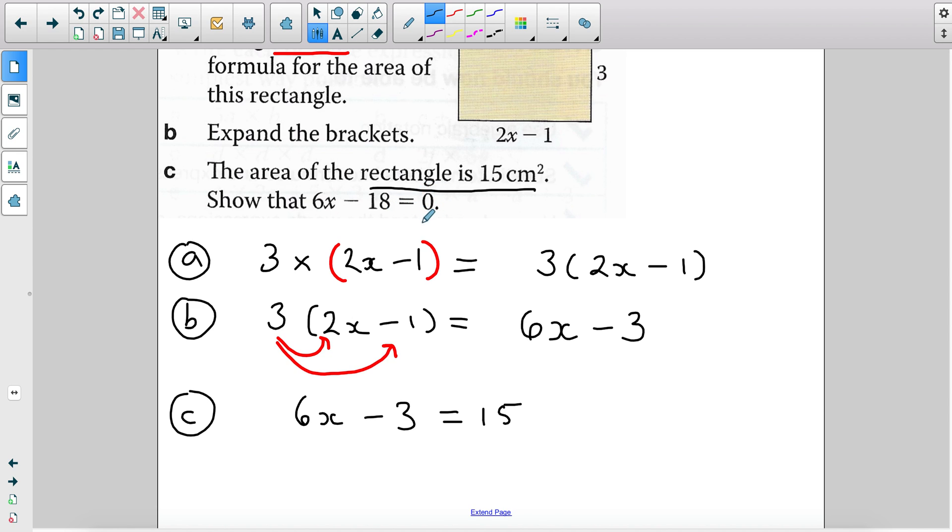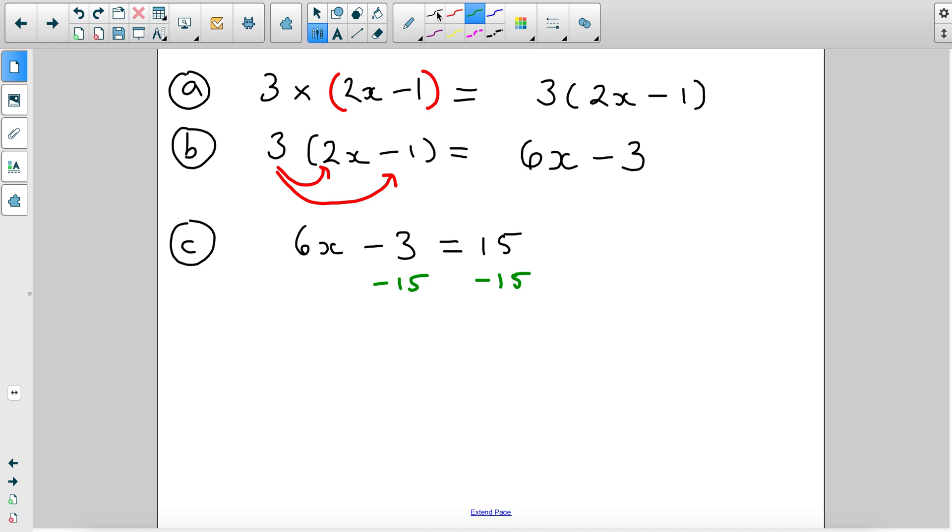The first hint is that you want 0 on the right hand side. So using the balancing method, I'm going to subtract 15 from both sides. So I get 6x minus 3 minus 15 equals 15 minus 15. That's 0. I'm going to simplify this expression. Negative 3 minus 15, that's minus 18 equals 0.